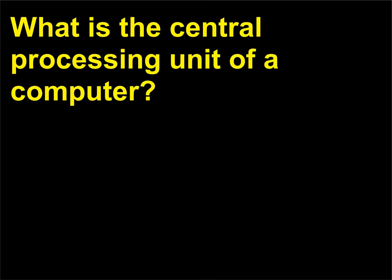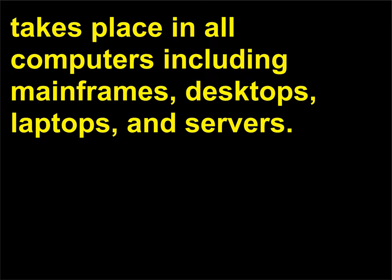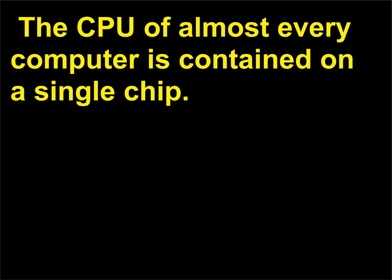What is the central processing unit of a computer? The central processing unit, CPU, of a computer is where almost all computing takes place in all computers including mainframes, desktops, laptops, and servers. The CPU of almost every computer is contained on a single chip.